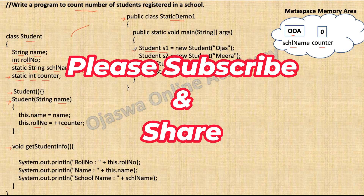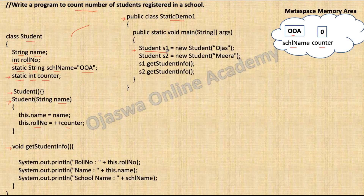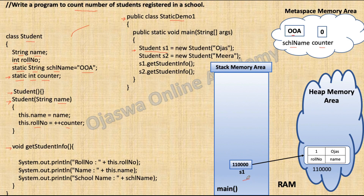Once the class is loaded and memory for static variables is reserved, control comes to the main method and student object s1 is created. Look at the diagram — reference variable s1 is created on the stack and the object is created on the heap. We have two instance variables, name and role number. Every object has its own copy of its instance variables, hence object s1 will reserve space for instance variables role number and name.